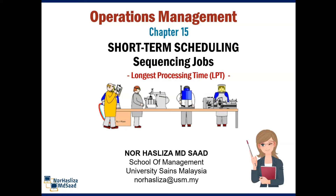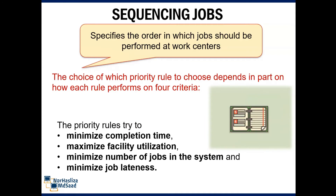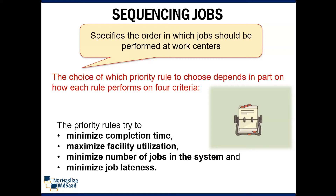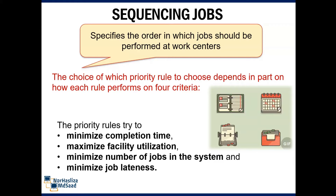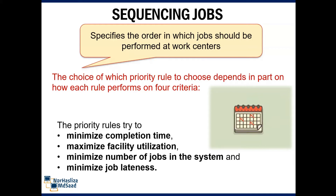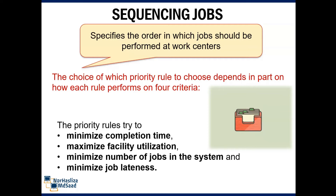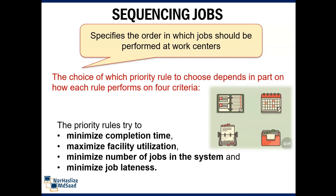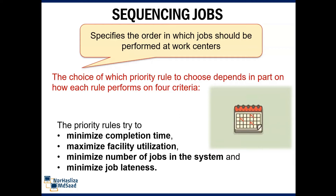In this video I will show you about short-term scheduling using sequencing jobs for Longest Processing Time, or LPT. Sequencing jobs specify the order in which jobs should be performed at work centers. The choice of which priority rule to use depends in part on how each rule performs on four criteria: minimize completion time, maximize facility utilization, minimize number of jobs in the system, and minimize job lateness.